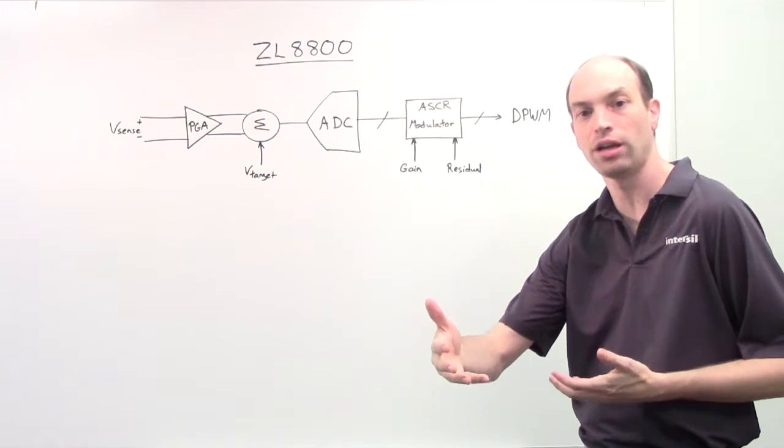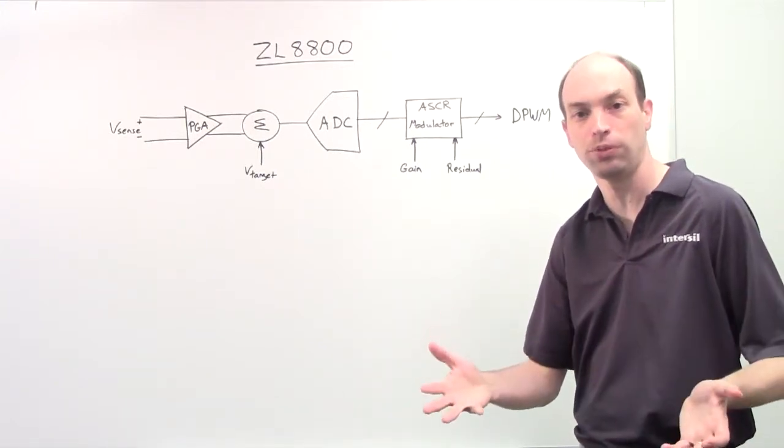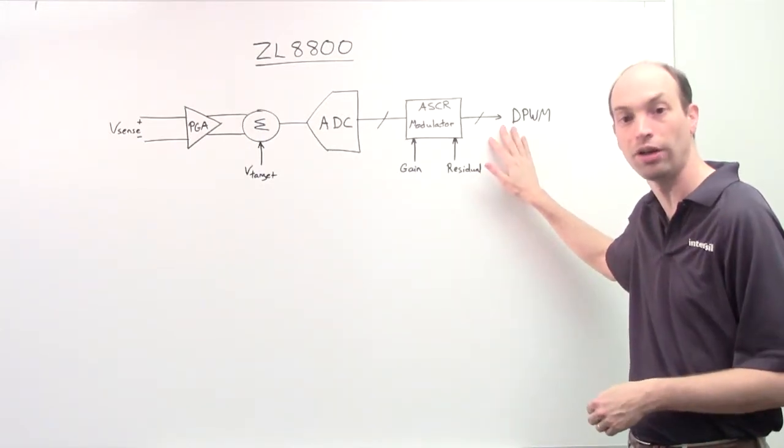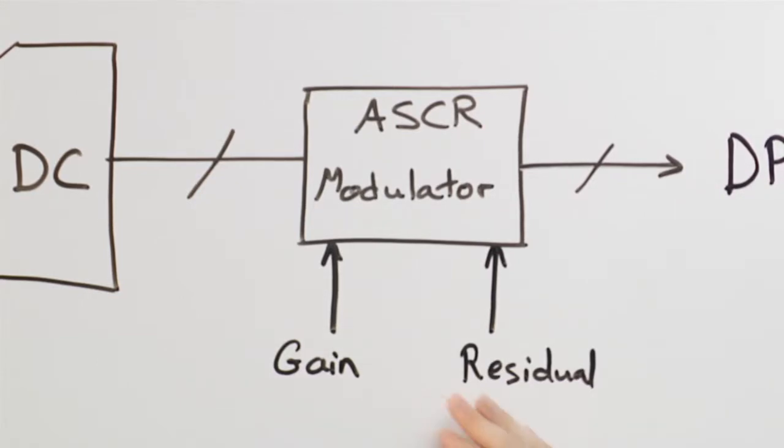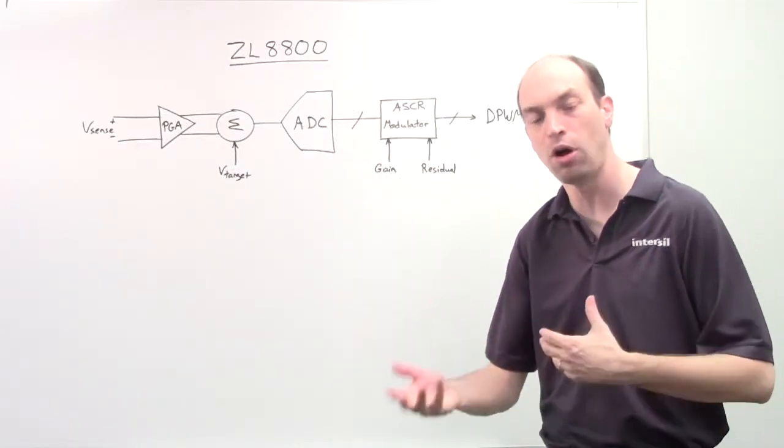For any load transient that comes on, it will look at the amount of charge displaced from the output capacitor and put the appropriate signal back on to replace it within a single cycle. The inputs to this block are two: there's a gain setting and a residual. This sets up the overall transient response speed. The residual is a dampening factor that sets the response rate of the loop.